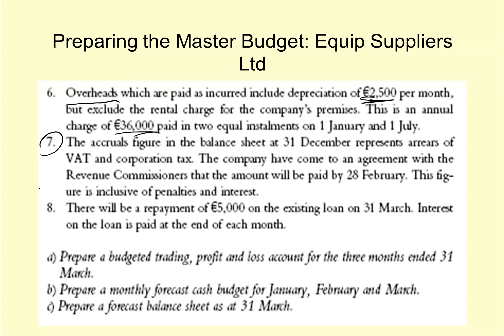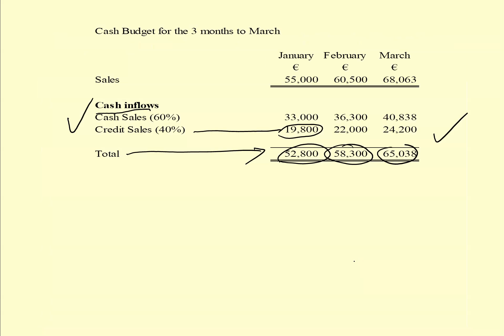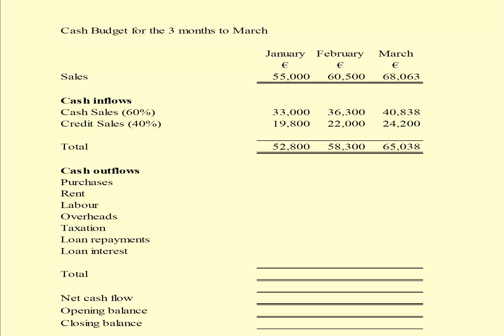Note number eight covers a loan repayment which is a cash outflow but not an expense, and we also have interest on the loan. So the cash outflows I'm listing are: purchases, rent, labour, overheads, taxation, loan repayments and loan interest.